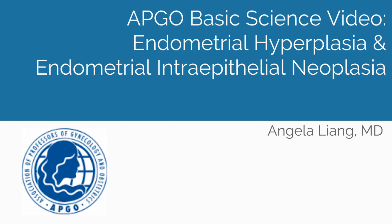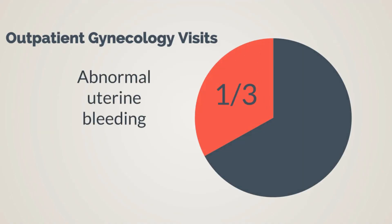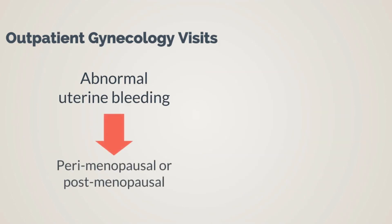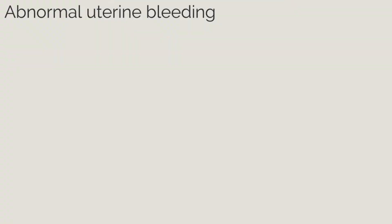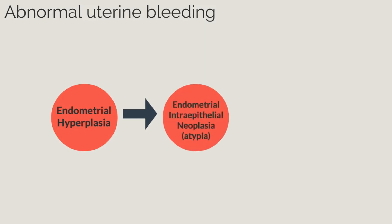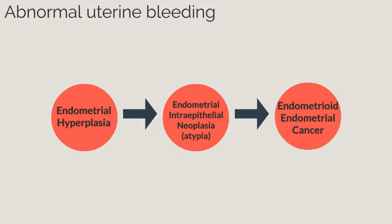APCO Basic Science Video topic: Endometrial Hyperplasia and Endometrial Intraepithelial Neoplasia. Abnormal uterine bleeding accounts for one-third of outpatient gynecology visits. When women are perimenopausal or postmenopausal, this increases to 70% of gynecology consults. Malignancy and hyperplasia risks increase with age. This video will focus on abnormal bleeding arising secondary to endometrial hyperplasia and endometrial intraepithelial neoplasia, previously known as atypia, and its potential for progression to estrogen-dependent type 1 endometrioid endometrial cancer.